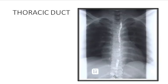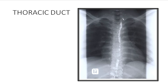This is a lymphography that shows the thoracic duct, which lies on the left side of the front of the dorsal vertebra; as mentioned before, it drains into the left side of the neck at the junction between the jugular vein and the subclavian vein.